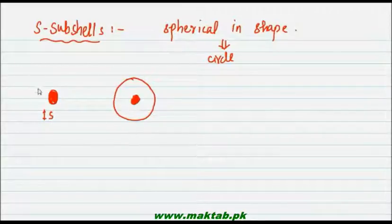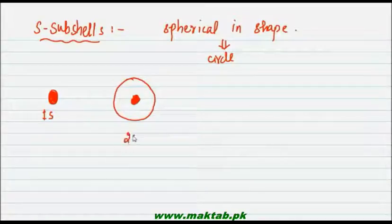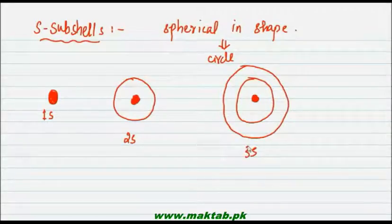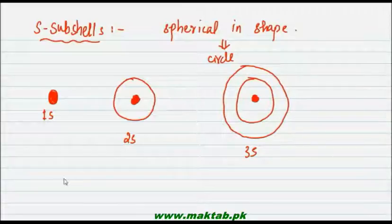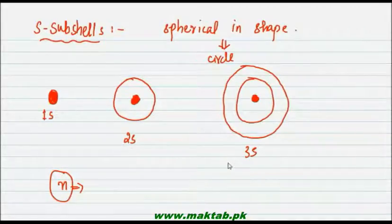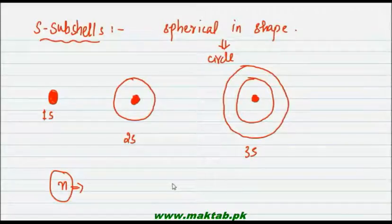When n is equal to 1, this is the principal quantum number. As the principal quantum number increases from 1, 2, 3, the S orbitals go from 1s to 2s to 3s. As the value increases, the size of the S orbital becomes larger.